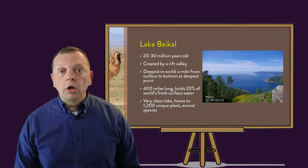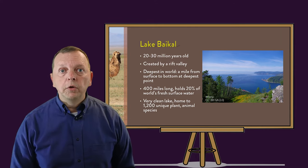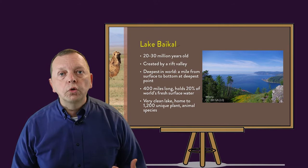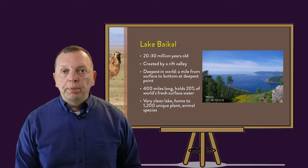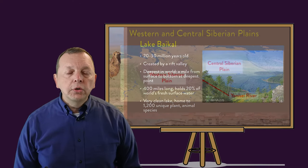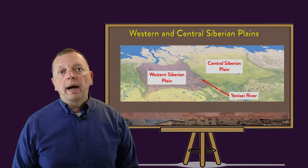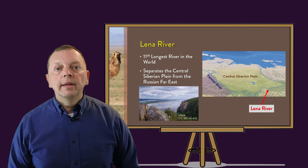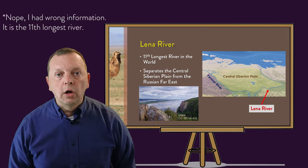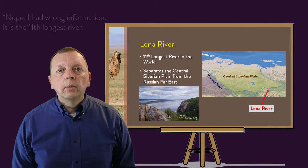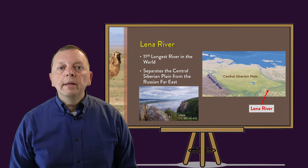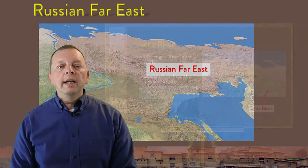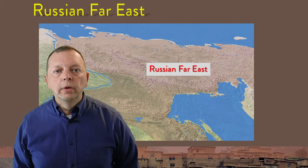Unlike the Aral Sea, which we'll talk about in a few moments, Lake Baikal is also one of the cleanest lakes in the world, and it is home to over 1,200 different species of plants and animals. The Central Siberian Plain is bounded by the Yenisei River in the west and the Lena River in the east. The Lena River is the sixth longest river in the world, and also has the distinction of being the boundary between the Central Siberian Plain and the Russian Far East, which extends east to the Pacific Ocean.